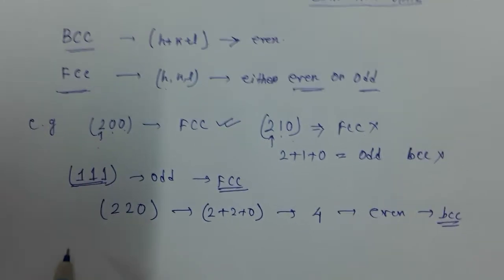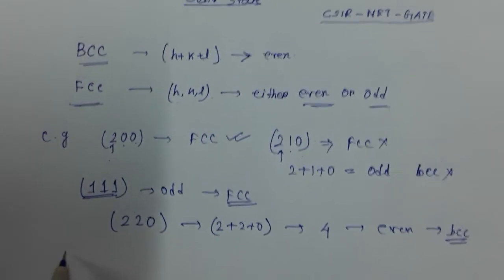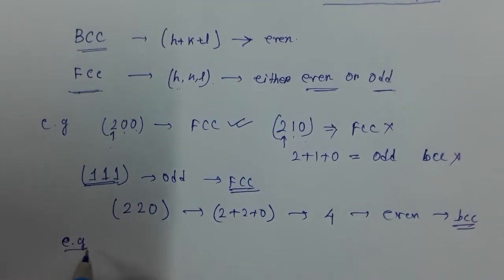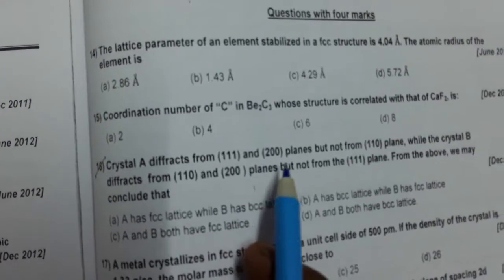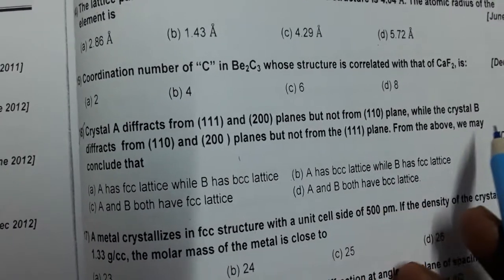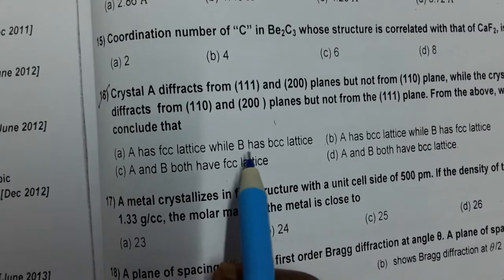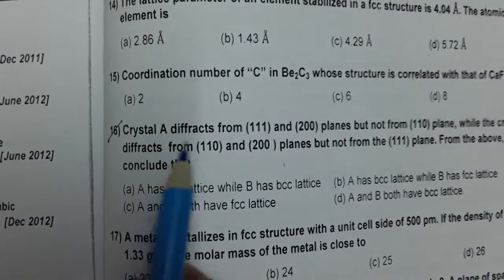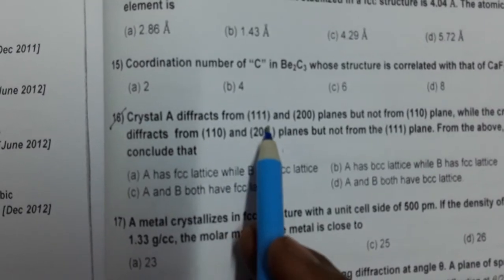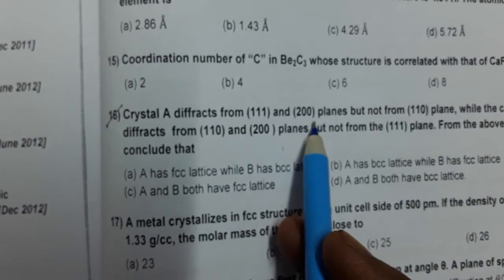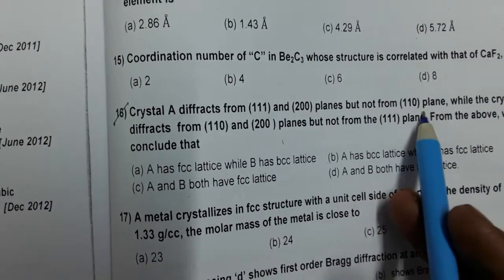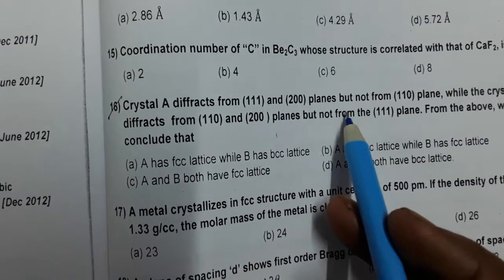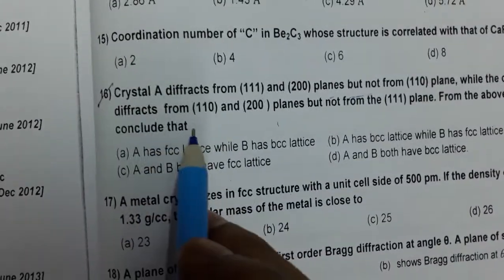Now let us consider the example given in the question. Crystal A diffracts from the (1 1 1) and (2 0 0) planes but not from the (1 1 0) plane. For (1 1 1), all are odd — FCC. For (2 0 0), all are even — FCC. And (1 1 0) is a mixture of even and odd, so it is not FCC. Therefore, crystal A will be FCC structure.